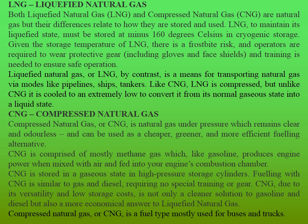Both liquefied natural gas (LNG) and compressed natural gas (CNG) are natural gas, but their differences relate to how they are stored and used. To maintain its liquefied state, LNG must be stored at a minimum of -160 degrees Celsius in cryogenic storage. Given this storage temperature, there is a fire risk and operators are required to wear protective gear like gloves and face shields, and training is needed to ensure safe operation. LNG is meant for transporting natural gas via modes like pipelines, ships, and tankers. Like CNG, LNG is compressed, but unlike CNG it is cooled to an extremely low temperature to convert it from its normal gaseous state into a liquid state.